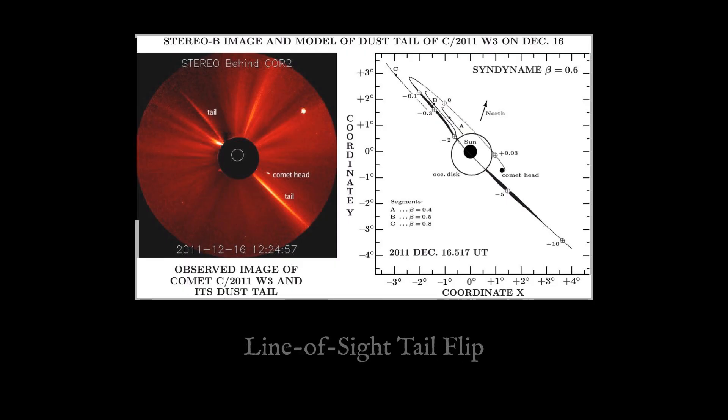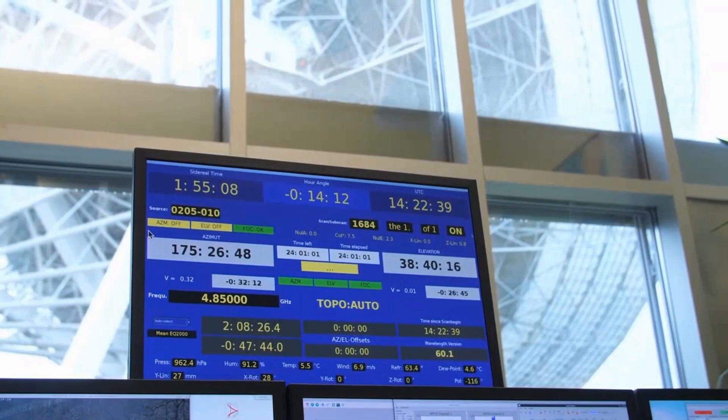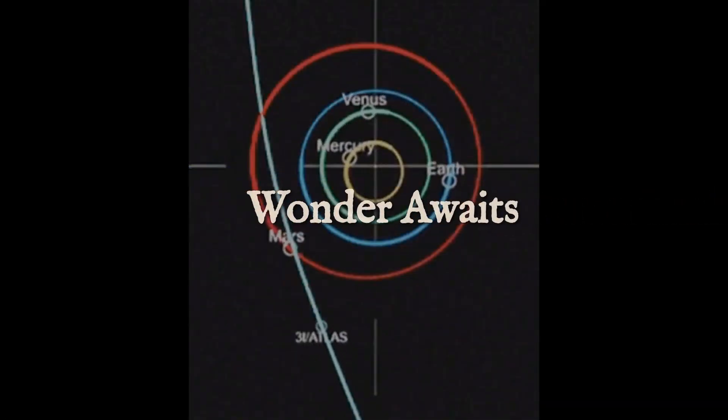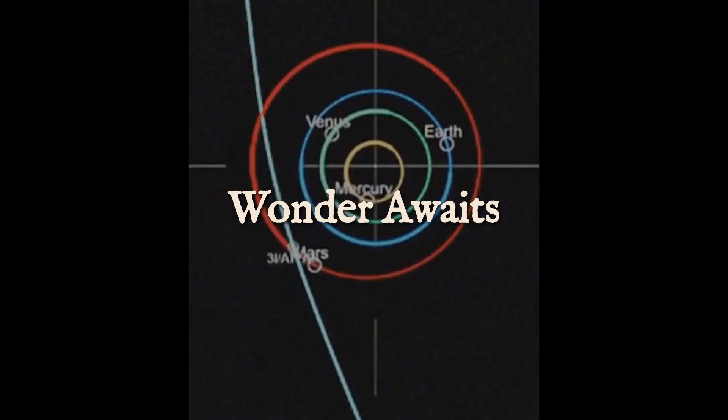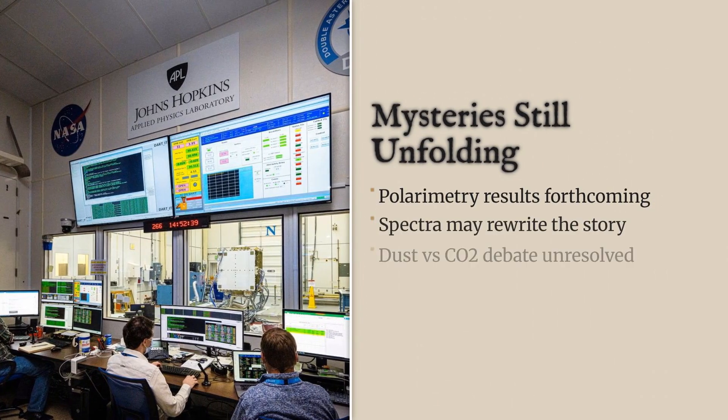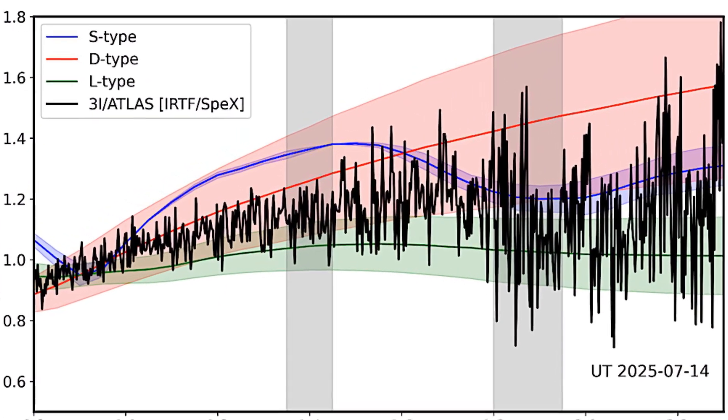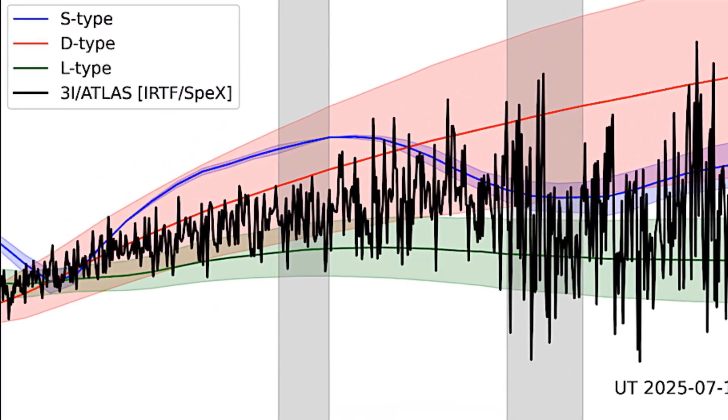Yet, the mainstream Vinson-Propstein geometry model explains the tail flip as a line-of-sight effect, with no need for unconventional physics or alien technology. No unexplained accelerations or technosignatures have been detected. Still, questions remain. Definitive polarimetry and spectroscopic data are pending, and the true composition of 3i/Atlas is not yet fully confirmed.